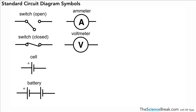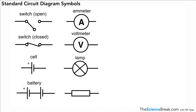The next one we have is a voltmeter. A voltmeter is similar, only it has a V in it, and that measures potential difference or voltage — we will tend to use the words potential difference. This is a lamp that gives off light, quite straightforward — often a filament lamp.